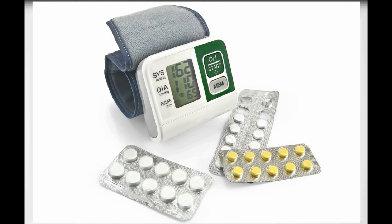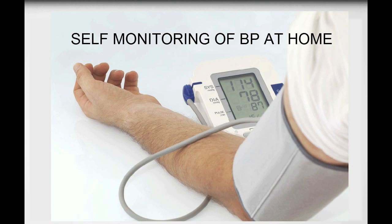People must take medicine daily to control hypertension. These drugs usually include diuretics, beta blockers, vasodilators, angiotensin converting enzyme or ACE inhibitors, calcium channel blockers, and alpha blockers. People with hypertension should check their blood pressure routinely and be under a doctor's care.